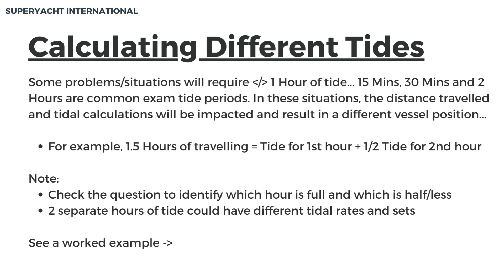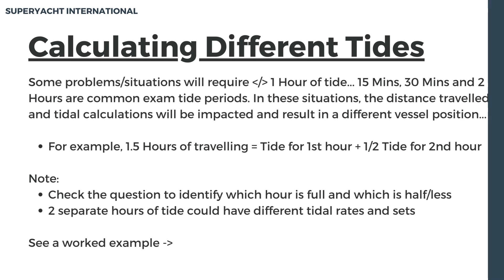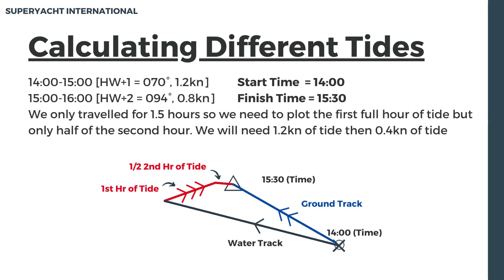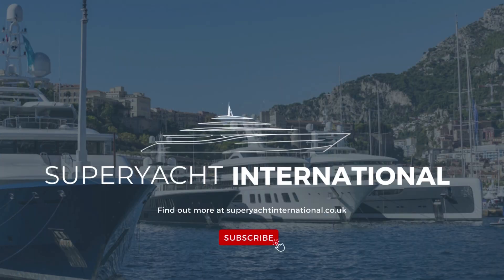Some problems will require less or more than one hour of tide. In these situations, the tidal calculations will be impacted. For example, 1.5 hours of traveling would need the tide for the first hour and the tide for half of the second hour, which will be different. Travel time is 1.5 hours, so we need the first full hour and only half of the second. 1.2 knots is hour 1 and now only 0.4 knots is hour 2. As you will see from the diagram, both tides must be plotted.